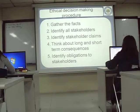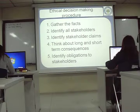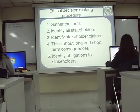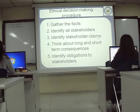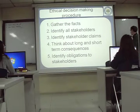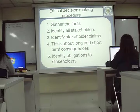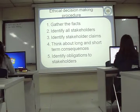Next, identify all the stakeholders. Maybe there are two main stakeholders written in the case, but also some not mentioned that you know are stakeholders. Write them down — you don't have to list everyone, just identify the main ones. Then write down the claims of the stakeholders — what do they want? You can make a little box with stakeholders and their claims. Then think about the long and short-term consequences of those claims.